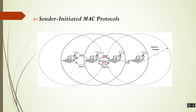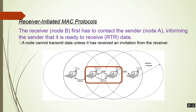In a receiver-initiated MAC protocol, the receiver first contacts the sender — Node A — informing it that it is ready to receive data, by sending an RTR (Ready to Receive) message. Here only one control message is used. A node cannot transmit data unless it has received an initiation from the receiver.